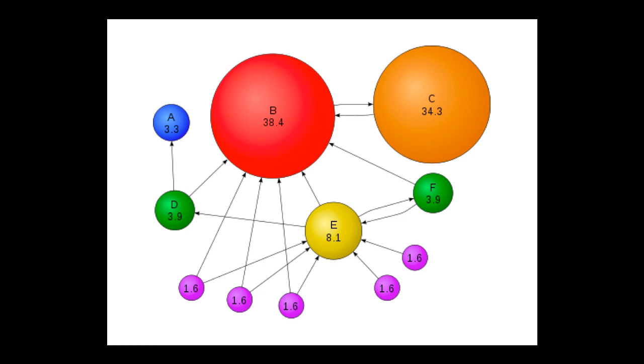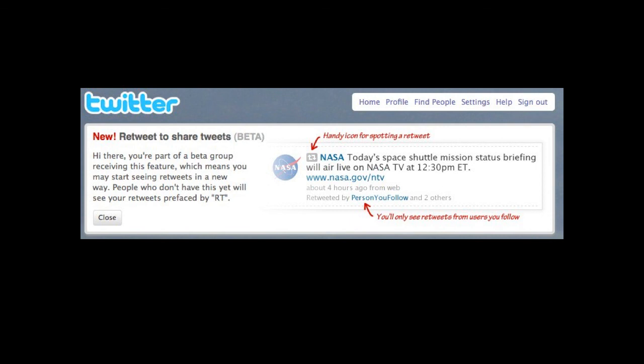And when Twitter put out the retweet functionality, they essentially stifled an emergent behavior in the network, which was retweeting, and replaced it with something more rigid and formalized, against which there's been a huge outcry.